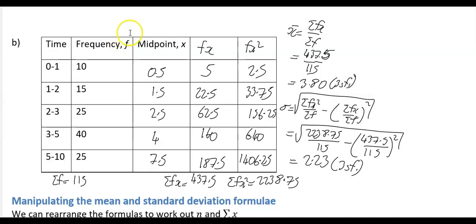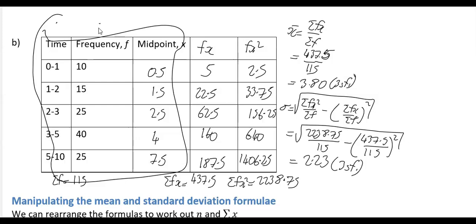If you were to do that grouped frequency example on the calculator, you would still need to work out the midpoints column first. Then you go to Menu 6, enter your x values and corresponding f values, press AC, then press OPTN, go to Variable Calc, and retrieve Σfx, Σf, Σfx², x̄, and σ from the calculator.